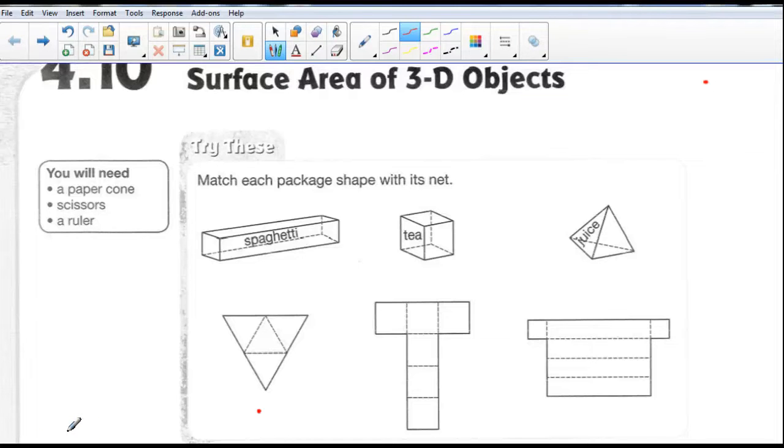Okay, this is 4.10 surface area of 3D objects. So probably what's going to happen in your class is that your teacher is going to have you do some projects of making what we call nets and turning a 2D piece of paper from a certain shape, cutting it out and folding it and taping it and making a 3D object. So what you can see in front of you in your workbook is we've got three three-dimensional shapes.